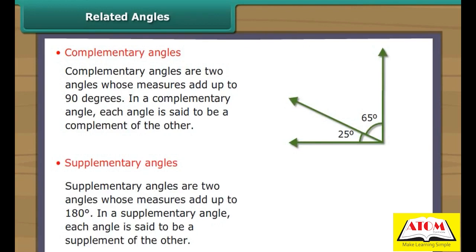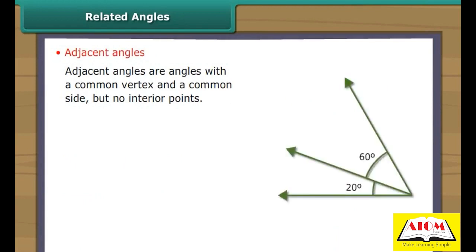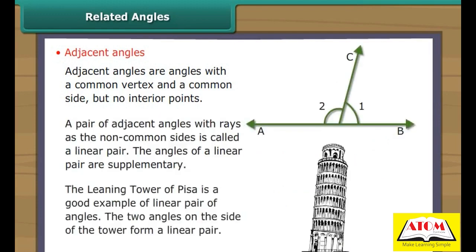Supplementary angles are two angles whose measures add up to 180 degrees. Adjacent angles are angles with a common vertex and a common side but no interior points. A pair of adjacent angles with rays as the non-common sides is called a linear pair.